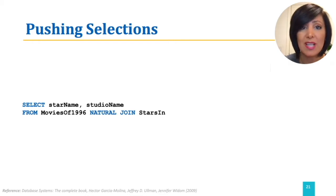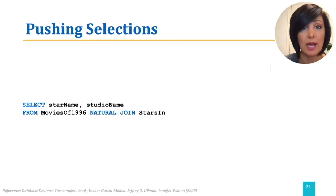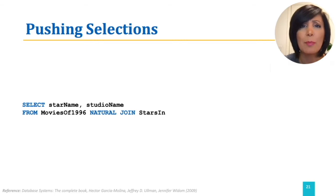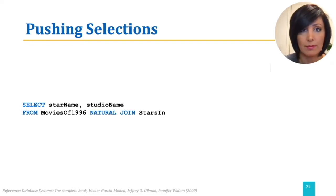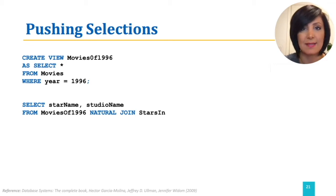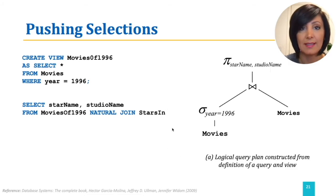Similar to an example we saw earlier in the session, we are going to use the Movies database. We want to find out which stars worked for which studios in 1996. This is a rather complex example regarding push loss because we first add a select or push it up and then push it down using the same push law. Our query involves a view named Movies of 1996, as you can see in the create view statement here. Our figure A shows the RA3 constructed from this query.